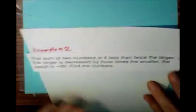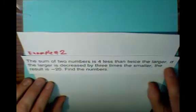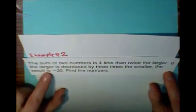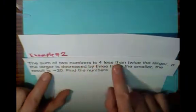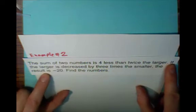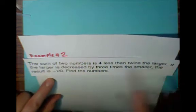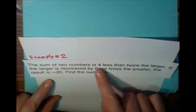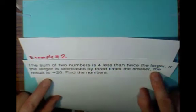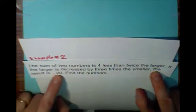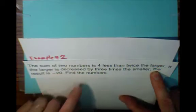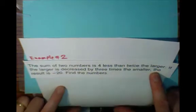So in example two: the sum of two numbers is four less than twice the larger. If the larger is decreased by three times the smaller, the result is negative 20. Find the numbers.